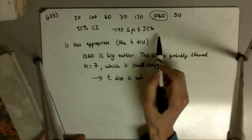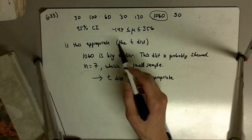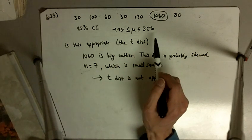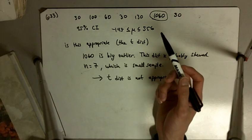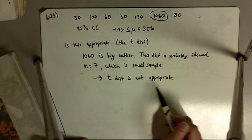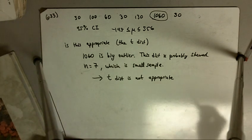So even though we can make the confidence interval and follow all the steps, this confidence interval does not give us a whole lot of meaning because the t distribution is not appropriate to use in this case.